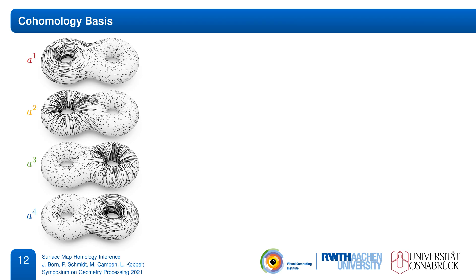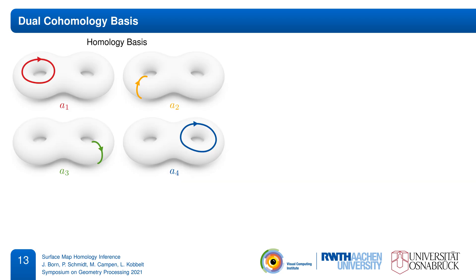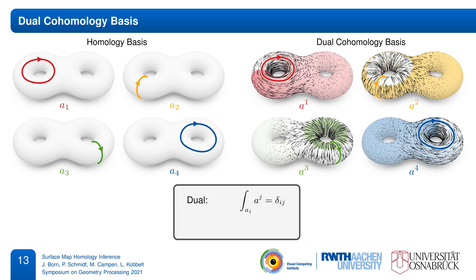We can also pick a cohomology basis, a set of basis co-cycles, and then every cohomology class is represented by some linear combination. Given some homology basis, there is a natural way to choose the corresponding dual cohomology basis. This duality is defined in terms of integrals: for every basis cycle, the corresponding basis co-cycle integrates to one along the associated basis cycle and to zero along all others. Additionally, we require that these co-cycles are harmonic, meaning as smooth as possible. This uniquely defines a canonical dual cohomology basis.